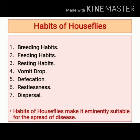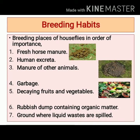Different habits of houseflies include breeding habits, feeding habits, resting habits, vomit drop, defecation, restlessness, and dispersal. Breeding places of houseflies, in order of importance, include fresh horse manure, human excreta, manure of other animals, garbage, decaying fruits and vegetables, rubbish dumps containing organic matter, and ground where liquid wastes are spilled.